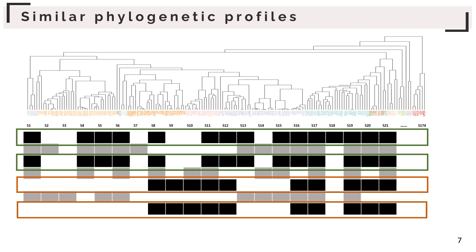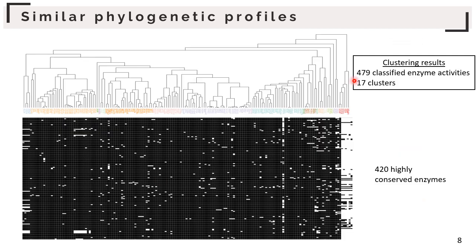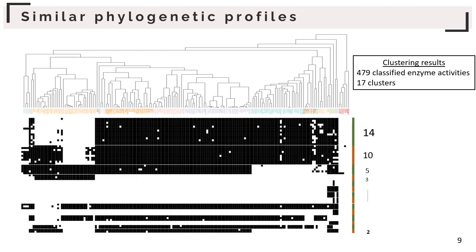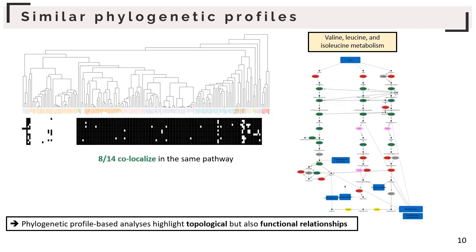As a result, we classified 479 enzyme activities into 17 clusters. The biggest cluster, with 420 enzyme activities, contains only highly conserved enzyme activities. Cluster sizes range from 14 to 2. For example, one cluster is a set of enzyme activities absent in most of the Saccharomyces. Interestingly, 8 out of 13 enzyme activities in this cluster are co-localized in the same metabolic pathway, with those enzyme activities colored in green.